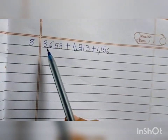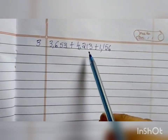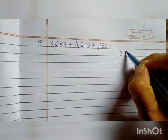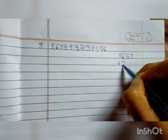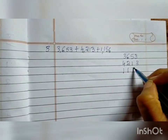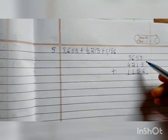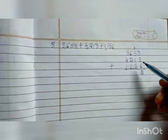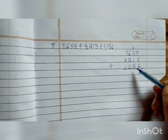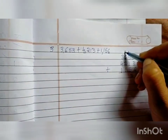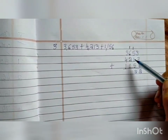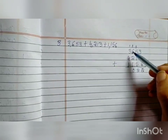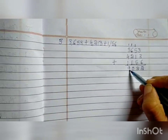Third one: 3653 plus 4213 plus 1156. We need to add all 3 numbers. 3 plus 3 is 6, 6 plus 6 is 12 — write 2 and carry 1 to the tens place. 1 plus 5 is 6, 6 plus 1 is 7, 7 plus 5 is 12 — write 2 and carry 1 to hundreds. 1 plus 6 is 7, 7 plus 2 is 9, 9 plus 1 is 10 — write 0 and carry 1 to thousands. 1 plus 3 is 4, 4 plus 4 is 8, 8 plus 1 is 9. So the answer is 9,022.